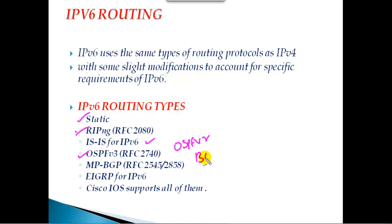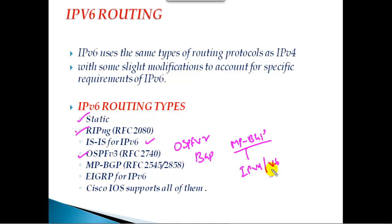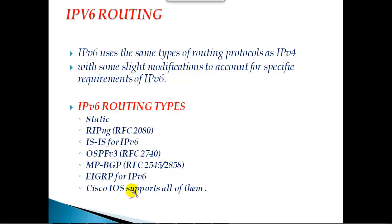BGP, which was initially deployed for IPv4, now supports something called MP-BGP (multi-protocol BGP). MP-BGP supports not only IPv4 but also IPv6, VPNv4, and VPNv6, which relate to MPLS concepts. EIGRP also supports IPv6. Most Cisco IOS versions support all of these features.